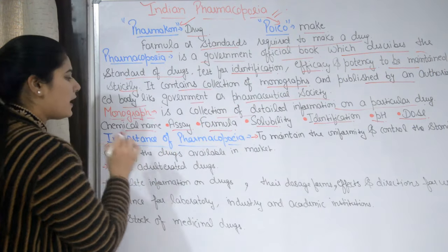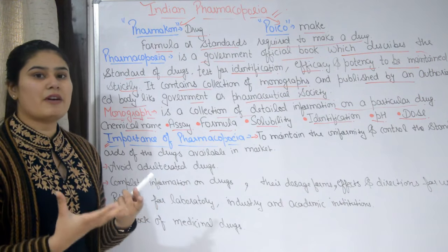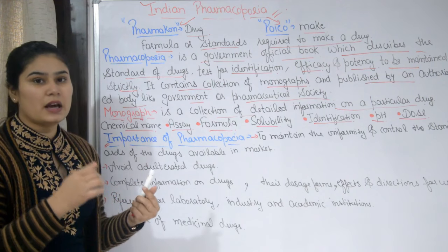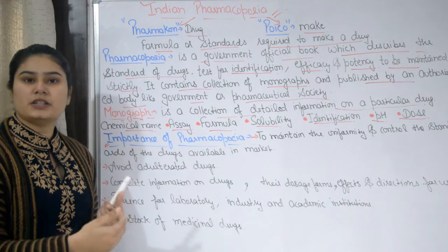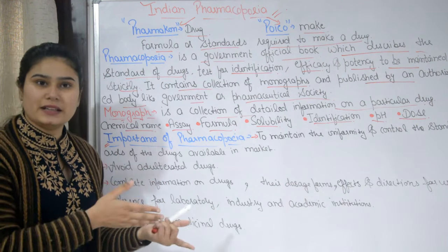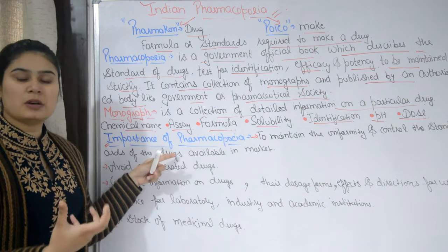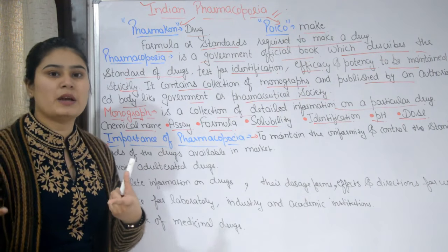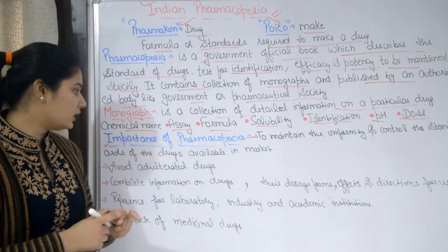What is the importance of pharmacopoeia? Every country has its own pharmacopoeia — like Indian Pharmacopoeia, British Pharmacopoeia, Japanese Pharmacopoeia, United States Pharmacopoeia, and European Pharmacopoeia. These are all official books of their respective countries. Countries that do not have their own pharmacopoeia rely on another country's pharmacopoeia.